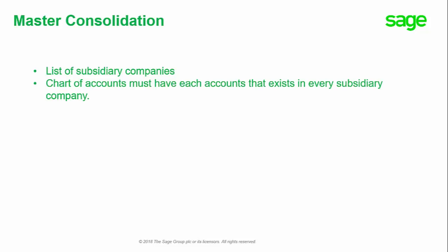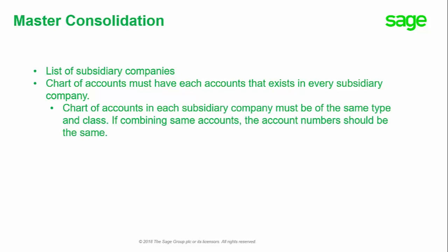Each master consolidation company has an associated list of subsidiary companies. The chart of accounts for the master company must have each account that exists in every subsidiary company. Any account appearing in more than one company must be of the same type and class, otherwise the charts will not merge and you will not be able to consolidate the data or print financial statements from your master company.